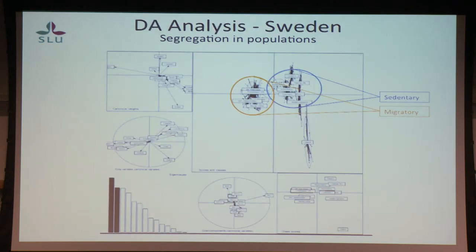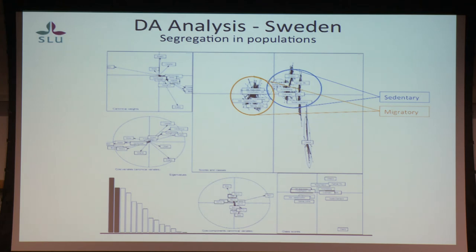We did a discriminant analysis using the variables we chose just to see how they grouped. Our southern study areas, and where the sedentary moose are in the north, are all clumped together, with the main variables being coniferous forests and clear-felled areas. Migratory moose are over to the left, driven by things like elevation, slope, and broadleaf forests — variables that are quite correlated. And then there's the island of Öland, all out on its own at the bottom, pulled by arable land and urban land cover.